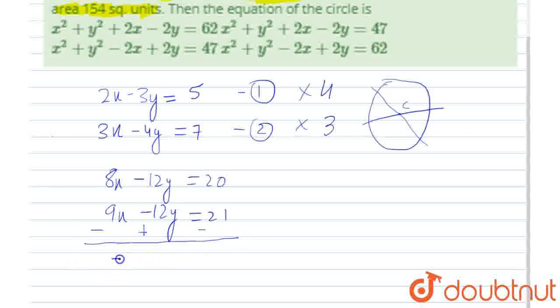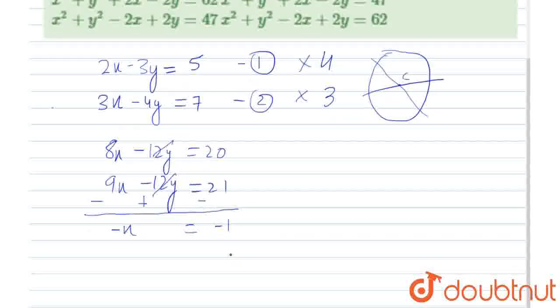Then we will be getting minus x equals to, because this 12y and 12y cancel out, minus x equals minus 1. So, we can easily say x equals 1.